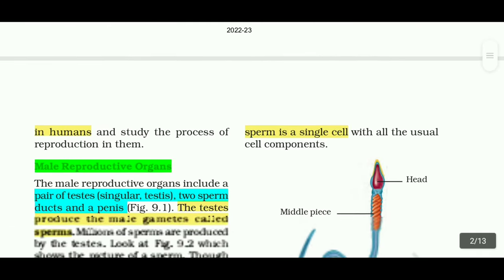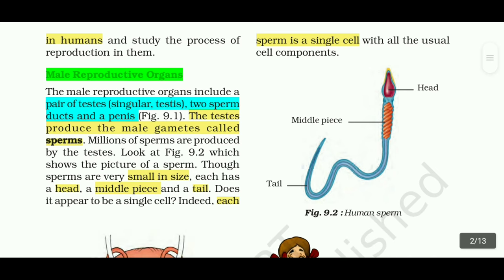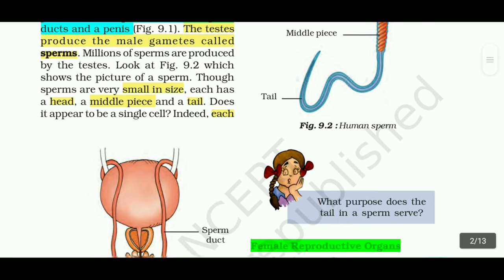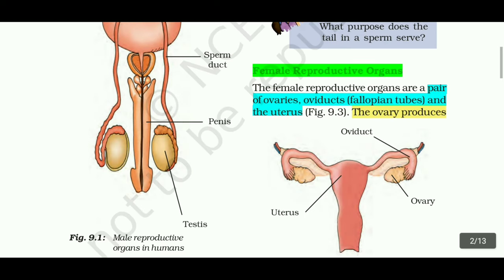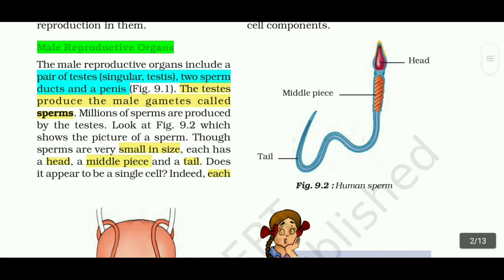Let us find out the reproductive parts in humans. First, we are going with male reproductive organs. Male reproductive organs include a pair of testes (singular: testis), two sperm ducts, and a penis. The testes produce male gametes called sperms.